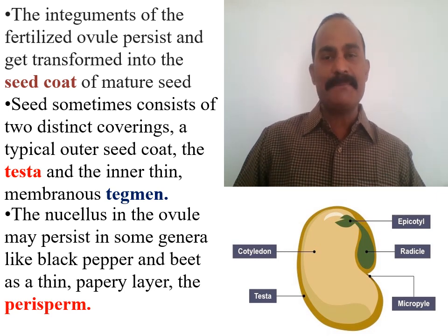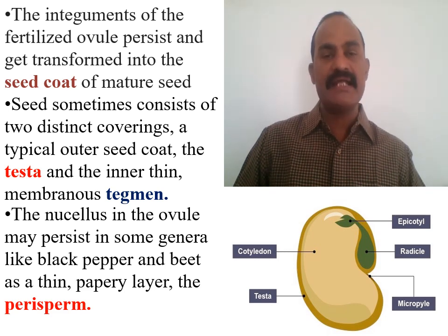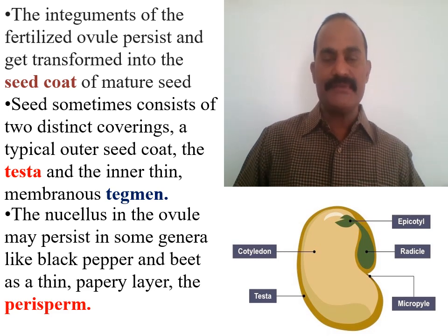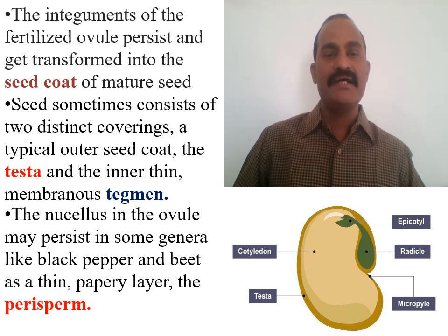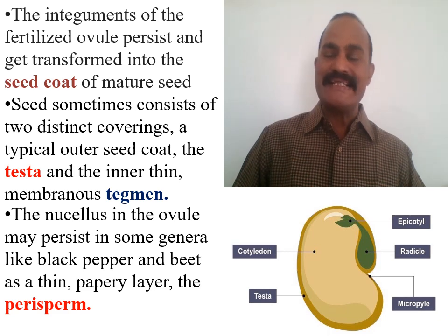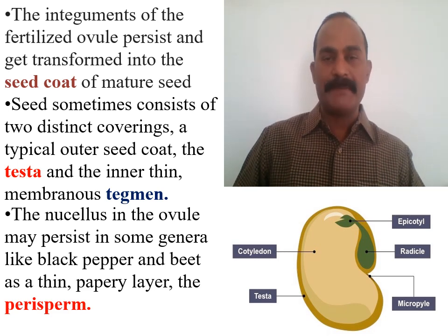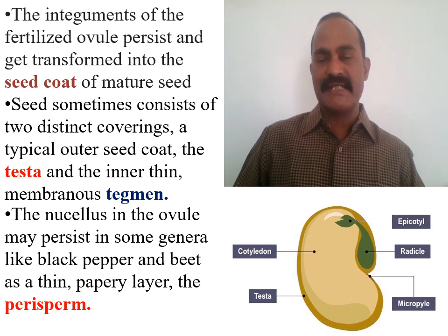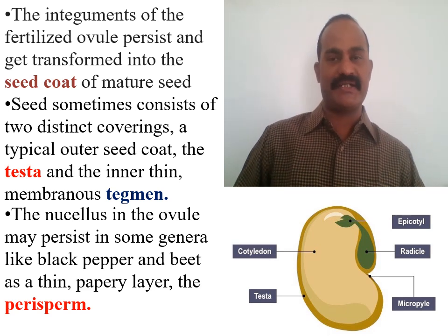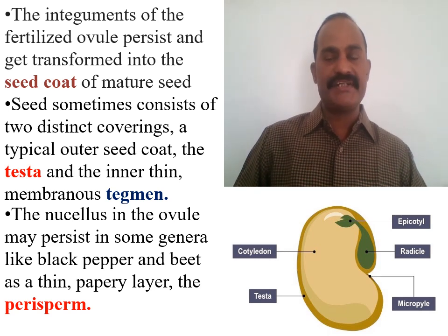The seed coat can sometimes be distinguished into two layers: the testa, which is the outer layer and is hard — many times waterproof — and the inner tegmen, which is soft and cushion-like. So testa and tegmen represent the two integumental layers that are converted to seed coat, forming the outer covering of the seed. The nucellus in the ovule may persist in some genera of angiosperms, like black pepper or beet, as a very thin layer called the perisperm, which is a representation of the earlier gametophytic generation.